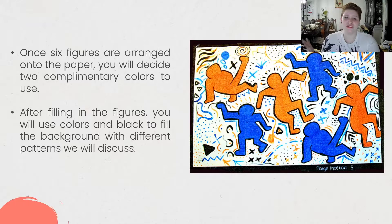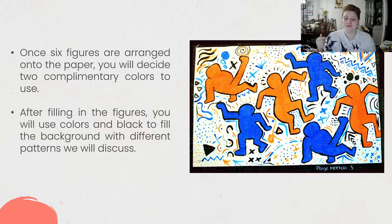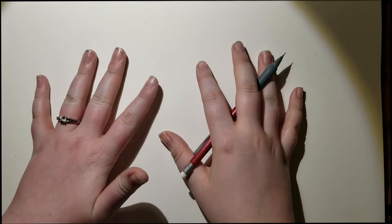We're going to use six figures and arrange them on the paper. Then we'll decide on two complementary colors — remember, complementary colors are the colors directly across from each other on a color wheel. After filling in the figures with your complementary colors, you'll use those colors plus black to fill the background with different patterns that we'll discuss. Then we're going to get started, and I'm going to show you how to sketch some Keith Haring figures.